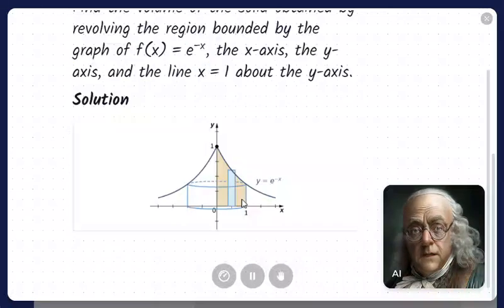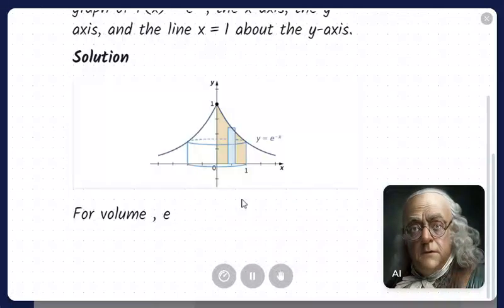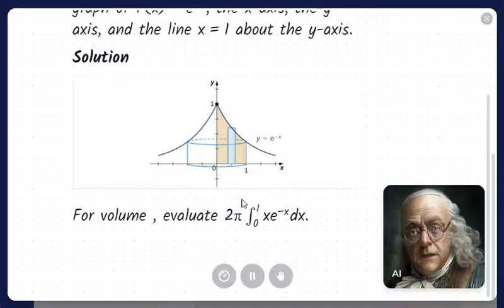The best option to solving this problem is to use the shell method. Begin by sketching the region to be revolved, along with a typical rectangle. See the following graph. To find the volume using shells, we must evaluate 2π times the integral of X times e to the power of negative X over 0 to 1.